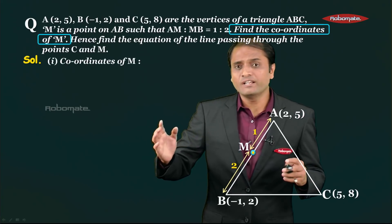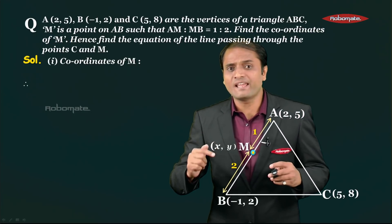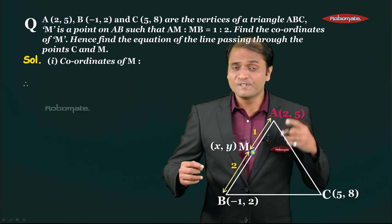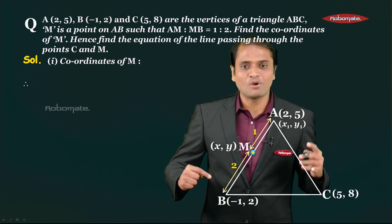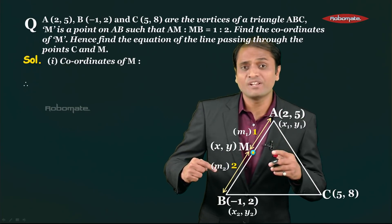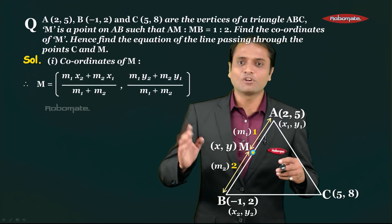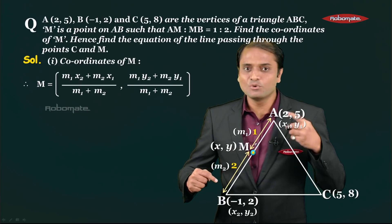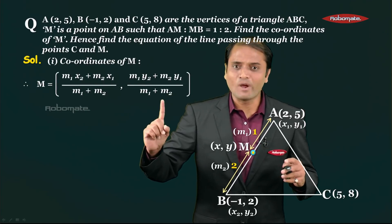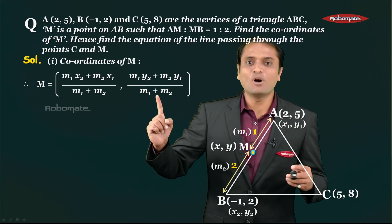We need to find the coordinates of point M. M is the dividing point which divides segment AB in the ratio 1:2, and we call its coordinates x,y. To find x and y we apply the section formula. Let the coordinates of A be x1,y1 and the coordinates of B be x2,y2, and the ratio 1:2 is m1:m2, so m1 = 1 and m2 = 2. The x-coordinate of M is: m1·x2 + m2·x1 all over m1 + m2, and the y-coordinate is: m1·y2 + m2·y1 all over m1 + m2.